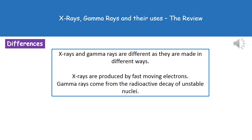However, they do have some key differences that we need to remember. First, they're made in very different ways. X-rays are produced by fast-moving electrons, whereas gamma rays come from the radioactive decay of unstable nuclei.